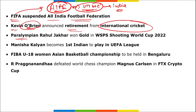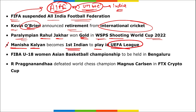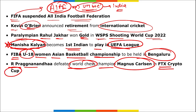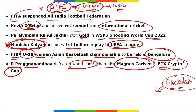Kevin O'Brien announced retirement from international cricket. Paralympian Rahul Jakhar won the gold medal at the WSPS Shooting World Cup 2022. Manisha Kalyan became the first Indian to play in the UEFA league — she was also named AIFF Sportswoman of the Year. Sunil Chhetri was named AIFF Sportsman of the Year. The FIBA Under-18 Women's Asian Basketball Championship will be held in Bangalore.